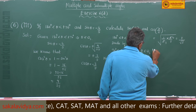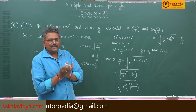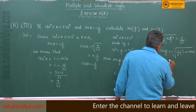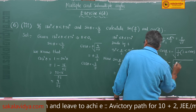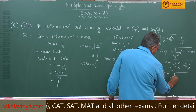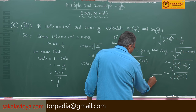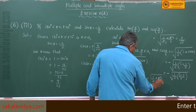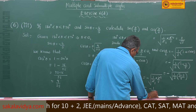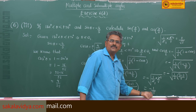Since θ/2 lies in the second quadrant, cos(θ/2) is negative. So cos(θ/2) = −√[(1 + cos θ)/2] = −√[½ × (1 − 3/5)] = −√[½ × 2/5] = −√[1/5] = −1/√5. Therefore, sin(θ/2) = 2/√5 and cos(θ/2) = −1/√5.